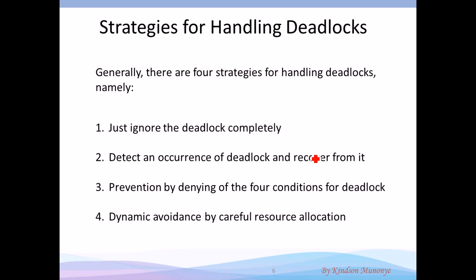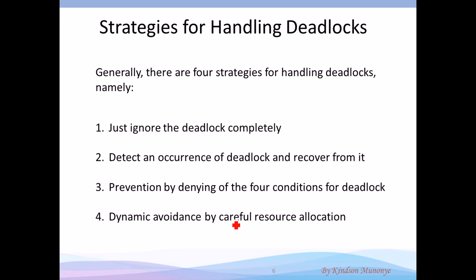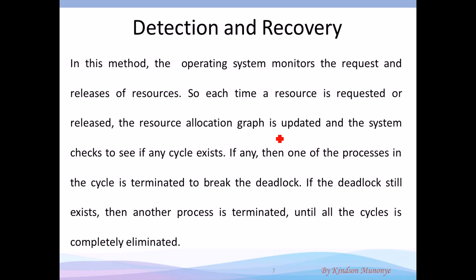Two: detect the occurrence of deadlock and recover from it. Three: prevent the deadlock by denying one of the four conditions. Four: dynamic avoidance by careful resource allocation — and here we are going to look at the Banker's algorithm.